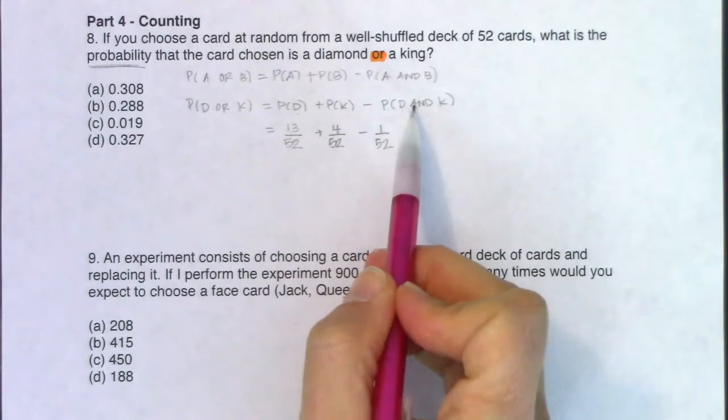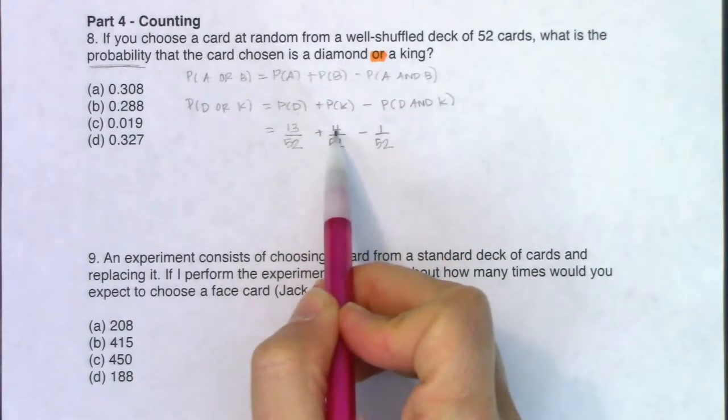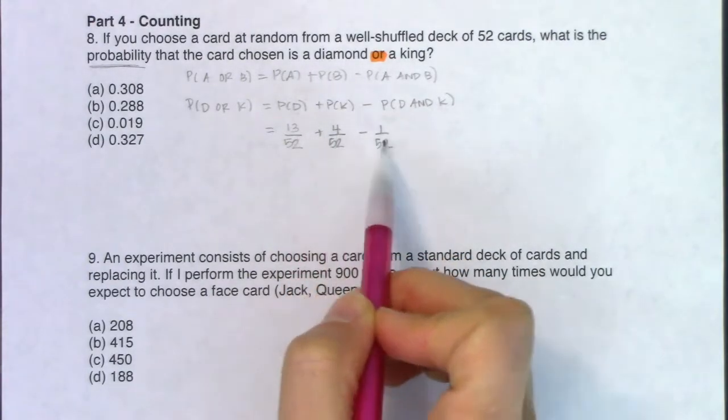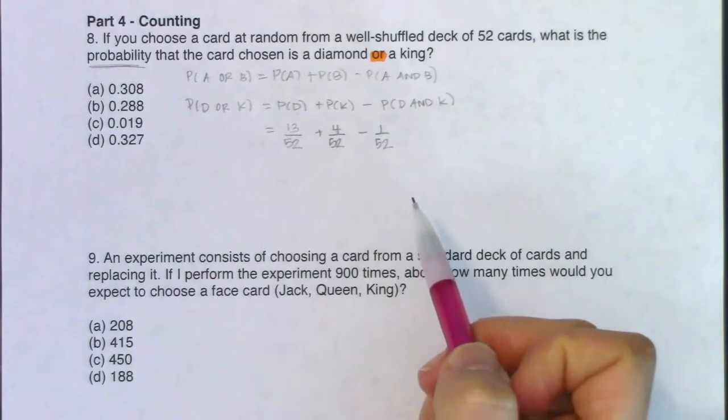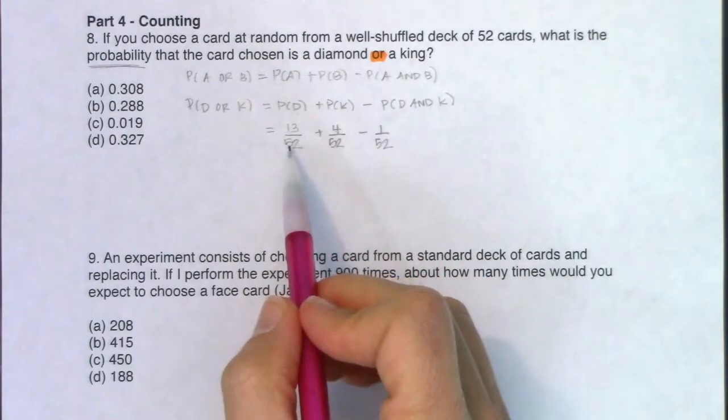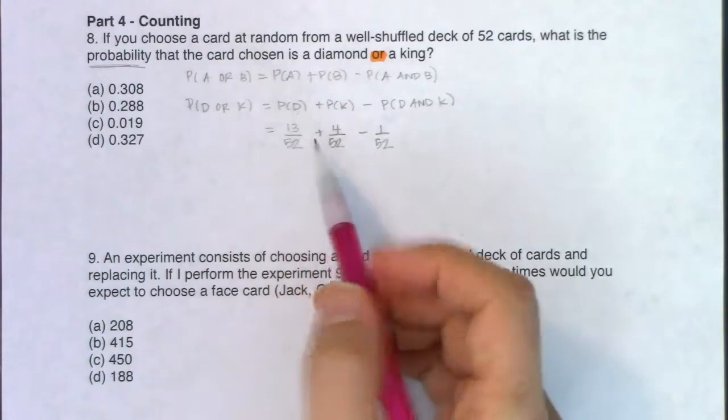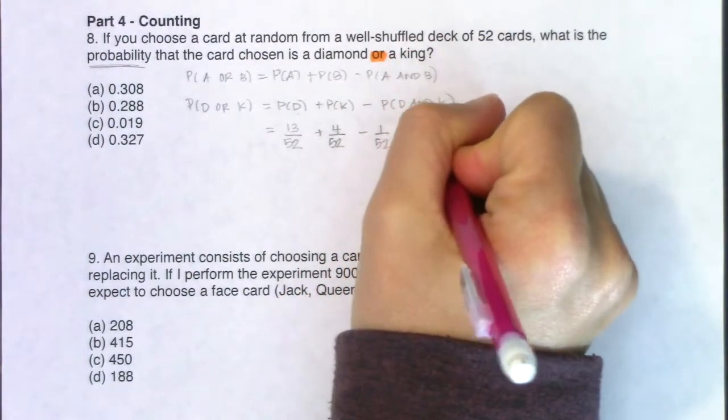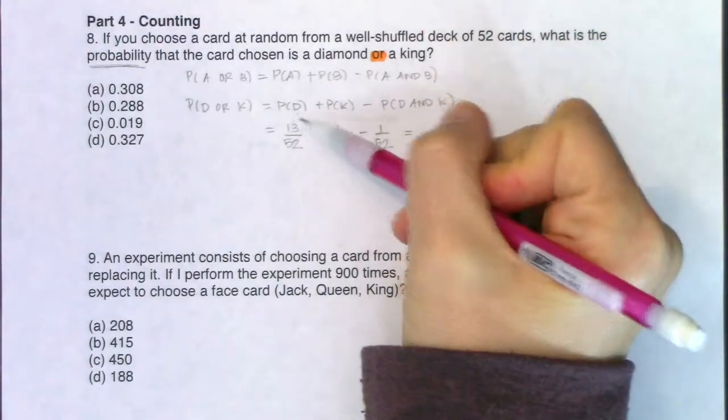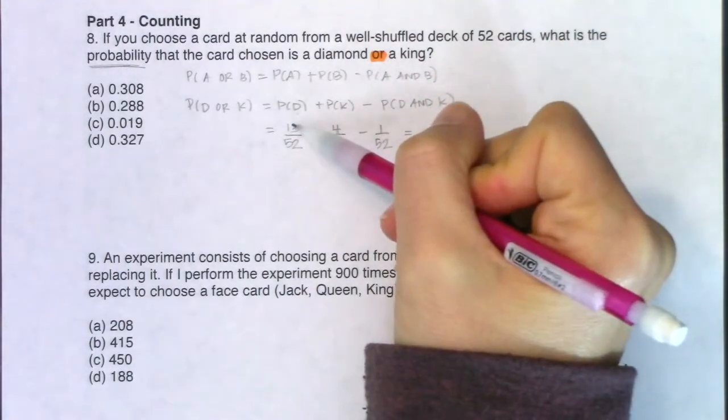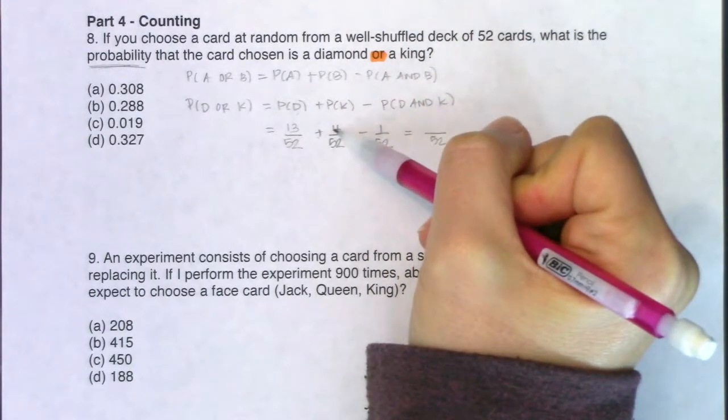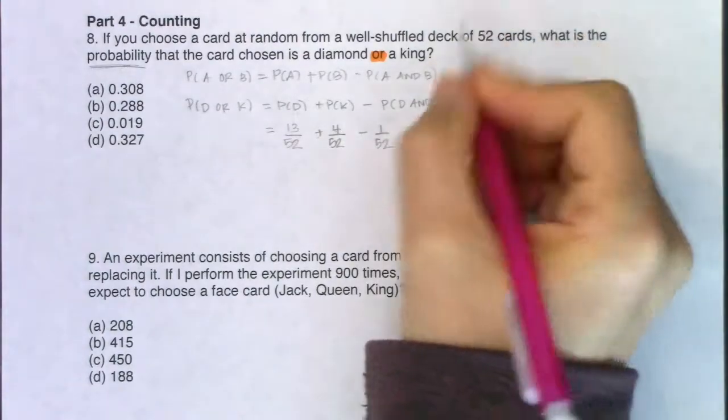So I need to subtract out that one out of 52. The reason being, we counted this card here, and we counted it here. So it got counted twice. So we want to subtract it out once for balance. And we've got some fractions with common denominators. So if you've got common denominators, you keep the denominator, and then I add and subtract numerators. So 13 plus 4 is 17. 17 minus 1 is 16.